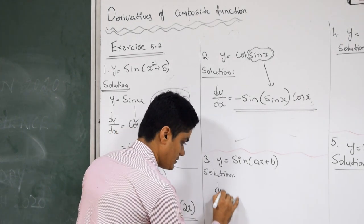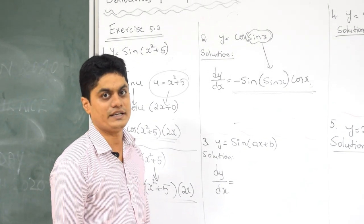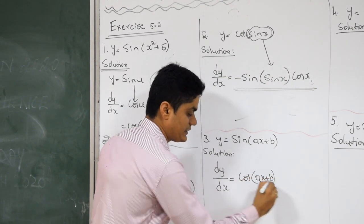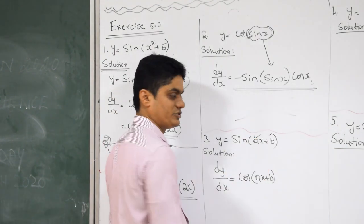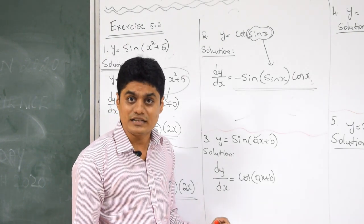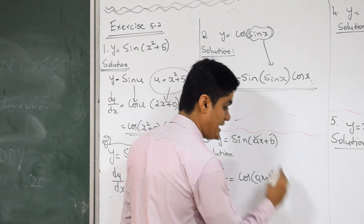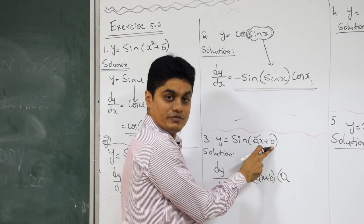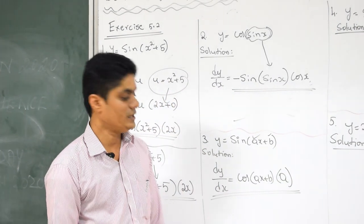Next problem. What is the differentiation of sine? Cos. As I told, whatever is inside, it will come as it is. Then differentiate AX plus B. Remember, A and B are constants — in differentiation, except X and Y, all remaining English alphabets are considered as constants. What is the differentiation of A into X? A into differentiation of X, which is 1 — so it is only A. Differentiation of B, which is constant, is 0. So what is the answer? Cos of AX plus B into A.